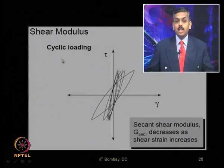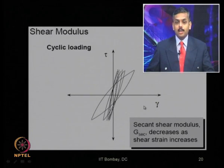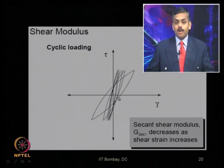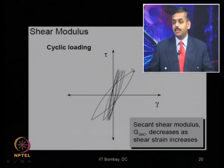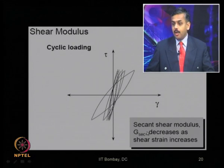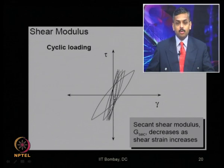When a material is subjected to cyclic loading, the shear stress versus shear strain behavior starts with a steeper slope, and as the number of cycles increases, the slope of this hysteresis loop reduces. The secant shear modulus G_secant decreases as the shear strain increases — it is higher at small shear strains and decreases at larger values.